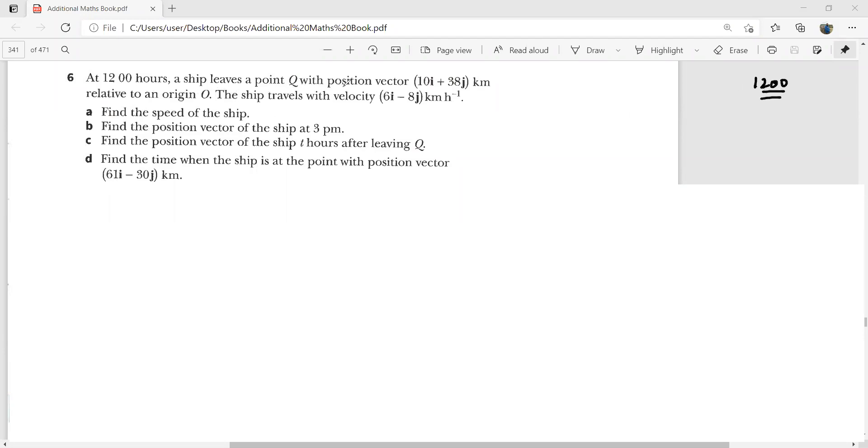A ship leaves a point Q with position vector (10, 38). So suppose here is the point Q. I'm not going to draw this according to scale, this is just a rough drawing. And here is your O. So it is starting from this. This is the position vector of this ship. So our ship is initially at this point. Let me write this 10, 38. So that is the starting position.